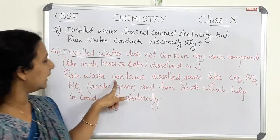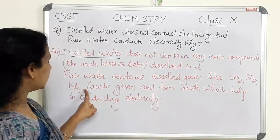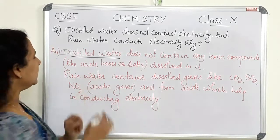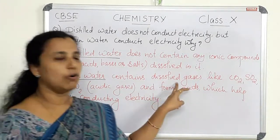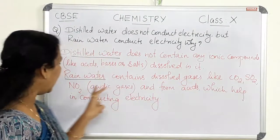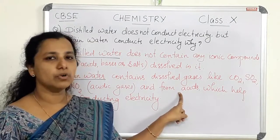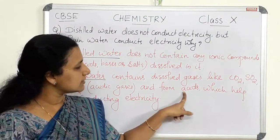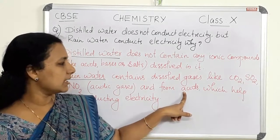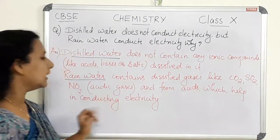In the case of rain water, rain water contains dissolved gases like carbon dioxide, sulfur dioxide, and nitrogen dioxide, which form acids that help in conducting electricity. These gases are acidic gases and there is a chance for the formation of acids. When acid solutions are present, there is a release of hydrogen ions and other ions — some charged particles are produced. Those charged particles will help in conducting electricity.